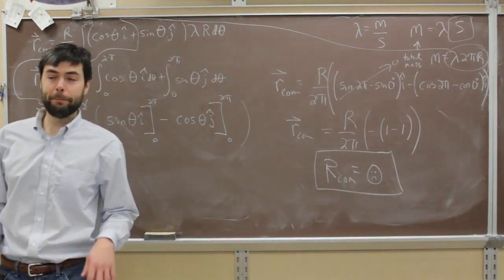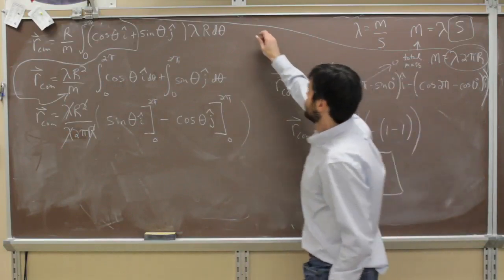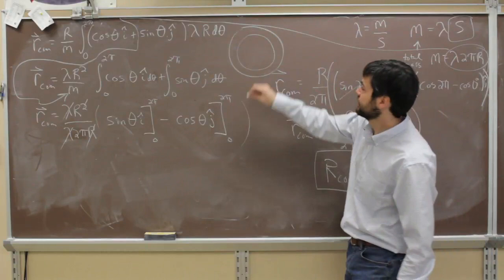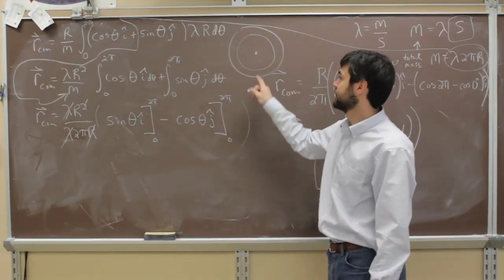Okay. But does it make sense? Yeah. Does it make sense? Look. Where is the center of mass of a hoop? The center. It's in the center. Where is zero, zero? The center. It's in the center.